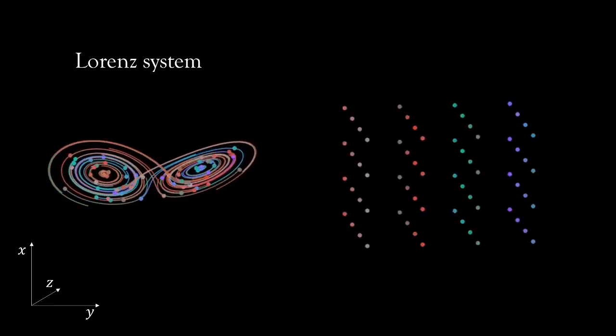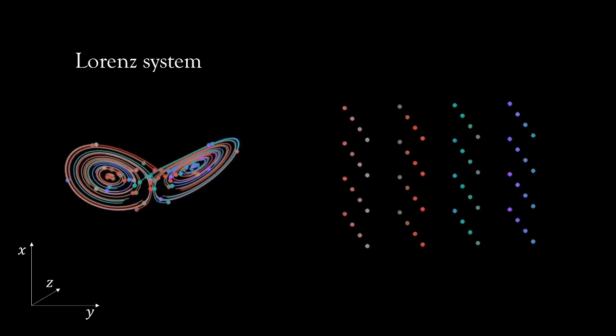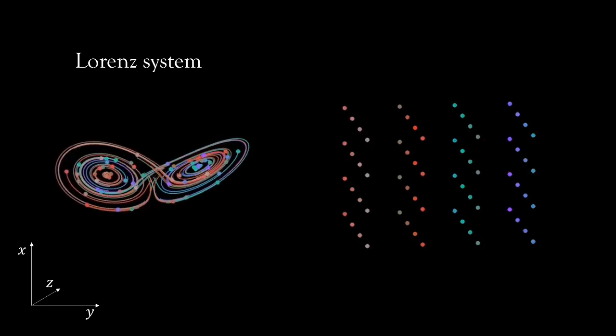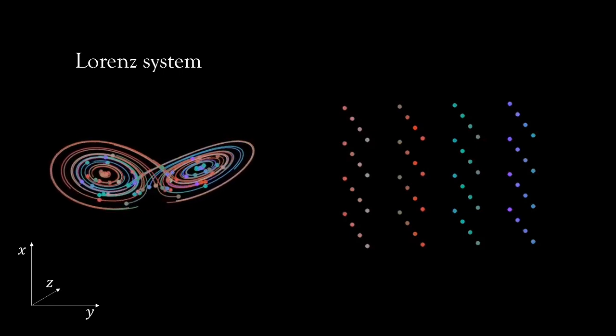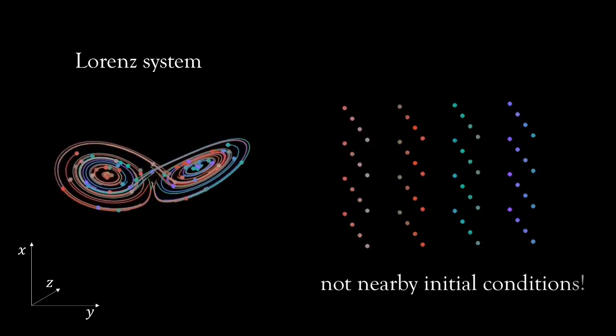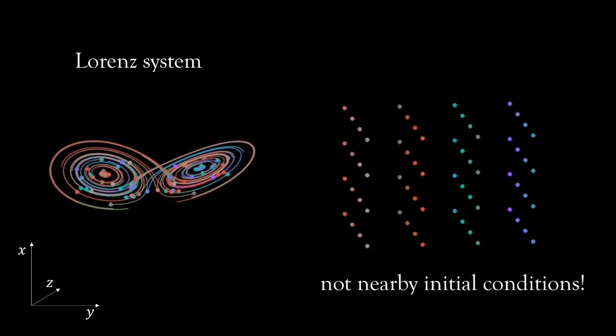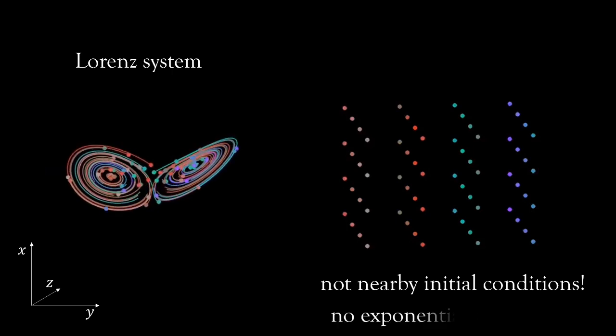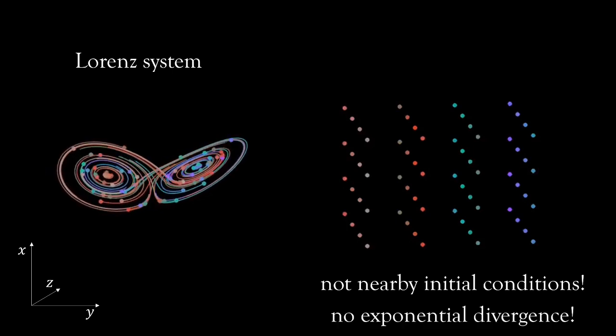Thankfully, we can identify the folding mechanism in some sense. So now on the right-half side, I have initialized many different initial conditions. Importantly, they are not nearby initial conditions, and this means that they don't have exponential divergence.